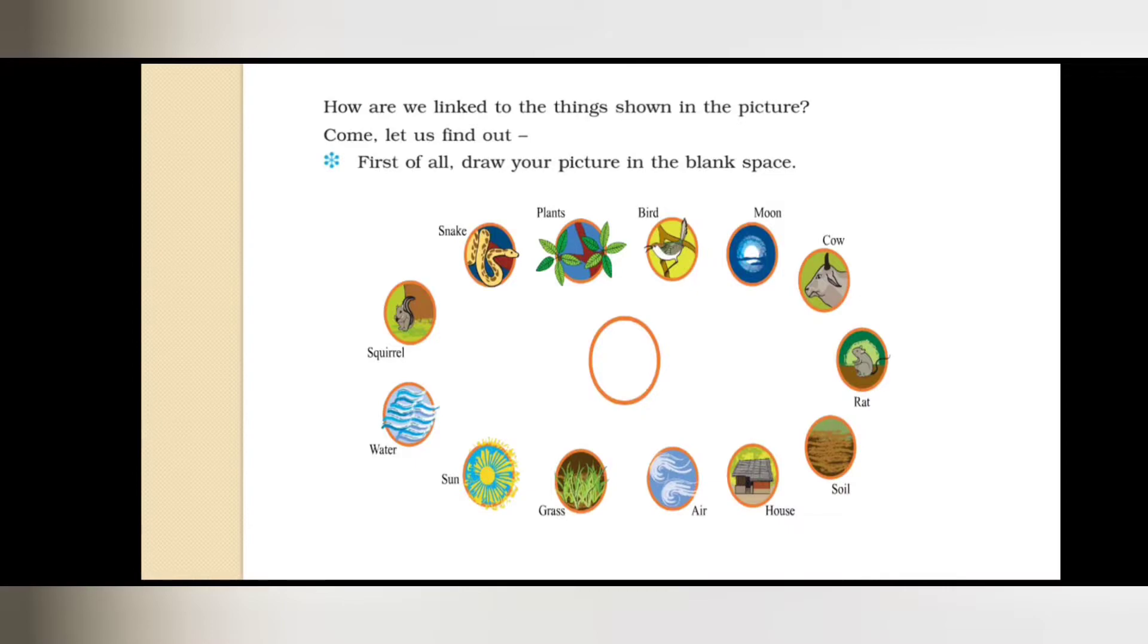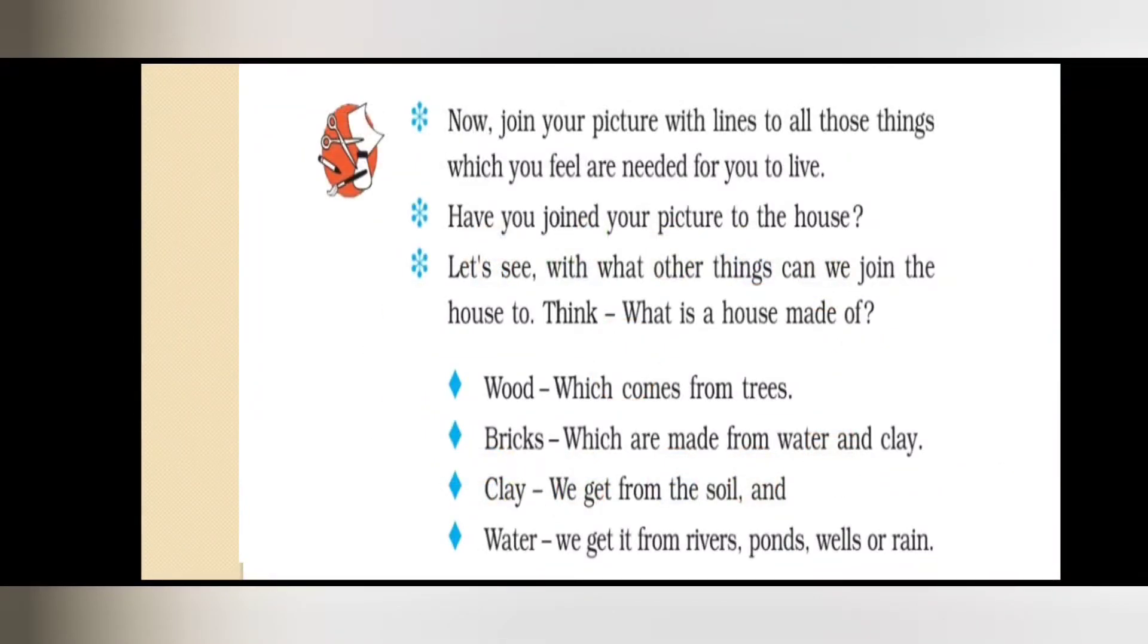How are we linked to the things shown in the picture? How do we link ourselves to all these things? So come, let's find out. First of all, draw your own picture in the blank space. You have a circle in the book. Here you can create your picture. Then connect those things you need. Now join the picture with lines to all those things which you feel are needed for you.